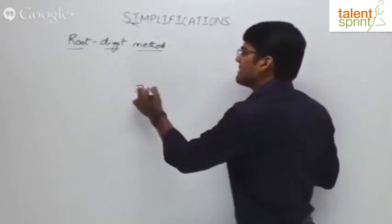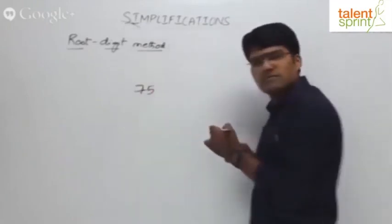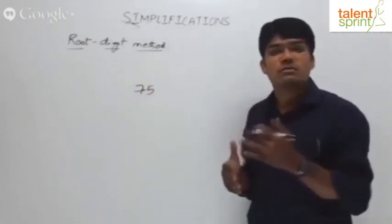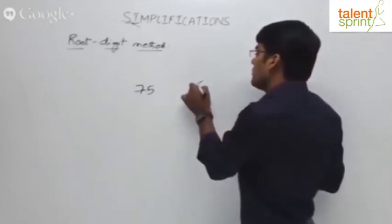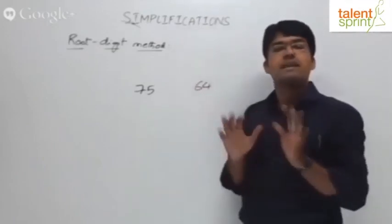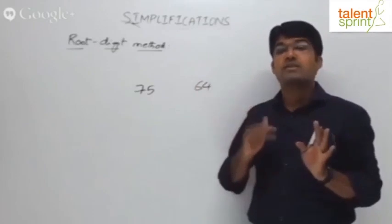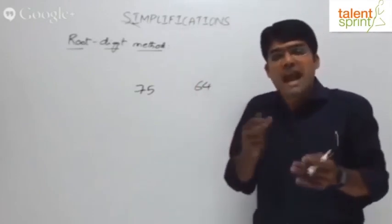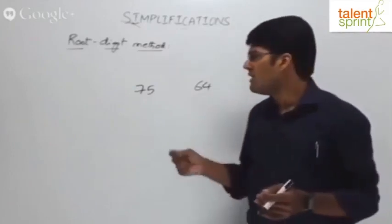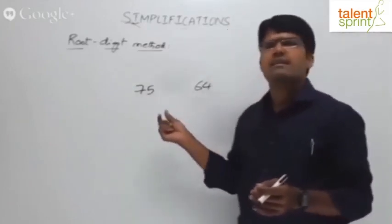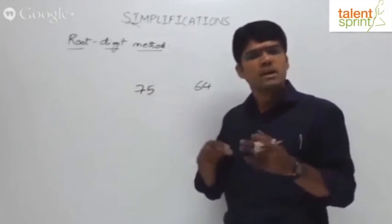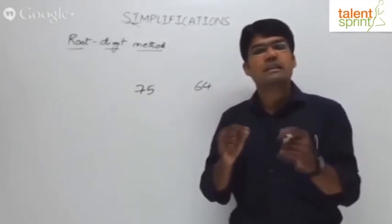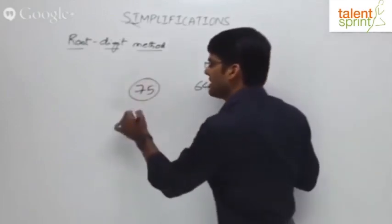For example, what is the root-digit of 75? Don't confuse this with square root. For example, 64 — the root-digit of 64 is not 8. Square root is 8, but root-digit is not 8. You add the digits until you get a single digit. So 7 plus 5 is 12, and 1 plus 2 is 3. The root-digit of 75 is 3.